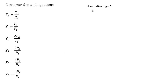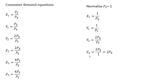The first thing we're going to do is normalize one of the prices to help simplify. It doesn't matter which price we normalize — it's the relative prices that matter. We're going to normalize the price of good z to equal 1. We substitute 1 in for the price of good z wherever we see it. So for consumer one's demand for good x and good y, we make that substitution. For consumer two's demand for good z, price of good z is 1, so it simplifies. For consumer three's demand for good z, it simplifies to 4 times the price of good y.